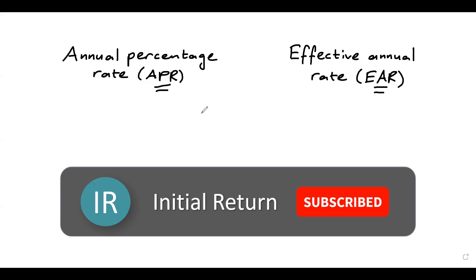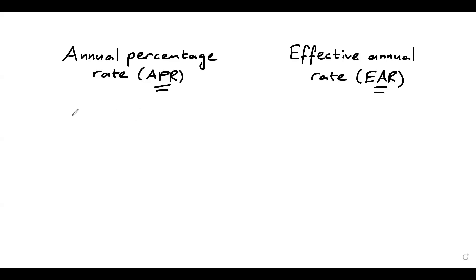To learn these concepts, let's concentrate on a simple example. Let's say you have some money to deposit in a bank and your bank says that they will pay you 20% APR, so per year basically, with semi-annual compounding. Now the question is, how much money will you have in your bank account at the end of a year?